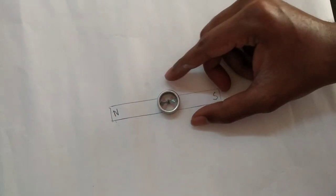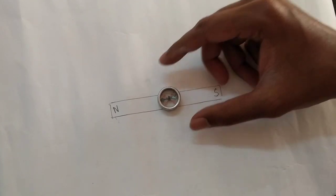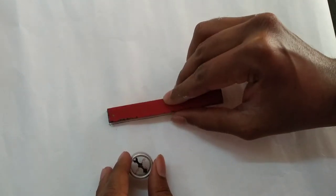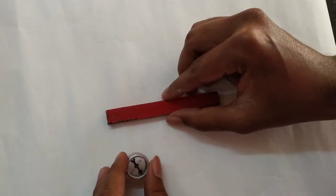I can now take the bar magnet again and I am keeping the bar magnet exactly in the position of the traced line like this.